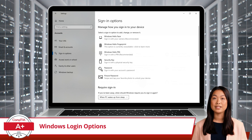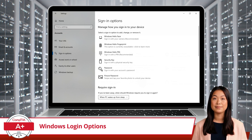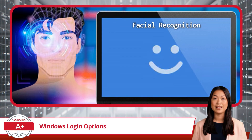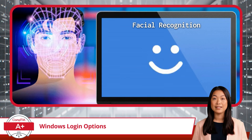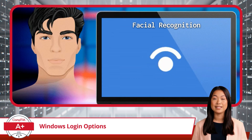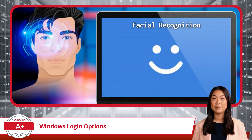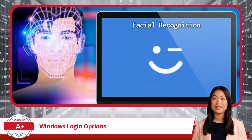First on the list is Facial Recognition, which Windows has dubbed Windows Hello Face. Facial Recognition is a convenient, hands-free login option available through Windows Hello. Using an infrared camera, this method scans your face to securely unlock your device. It's quick and highly secure, offering seamless access without the need to type anything. You can set this up in the Sign-in Options by selecting Windows Hello Face and following the prompts to register your face.